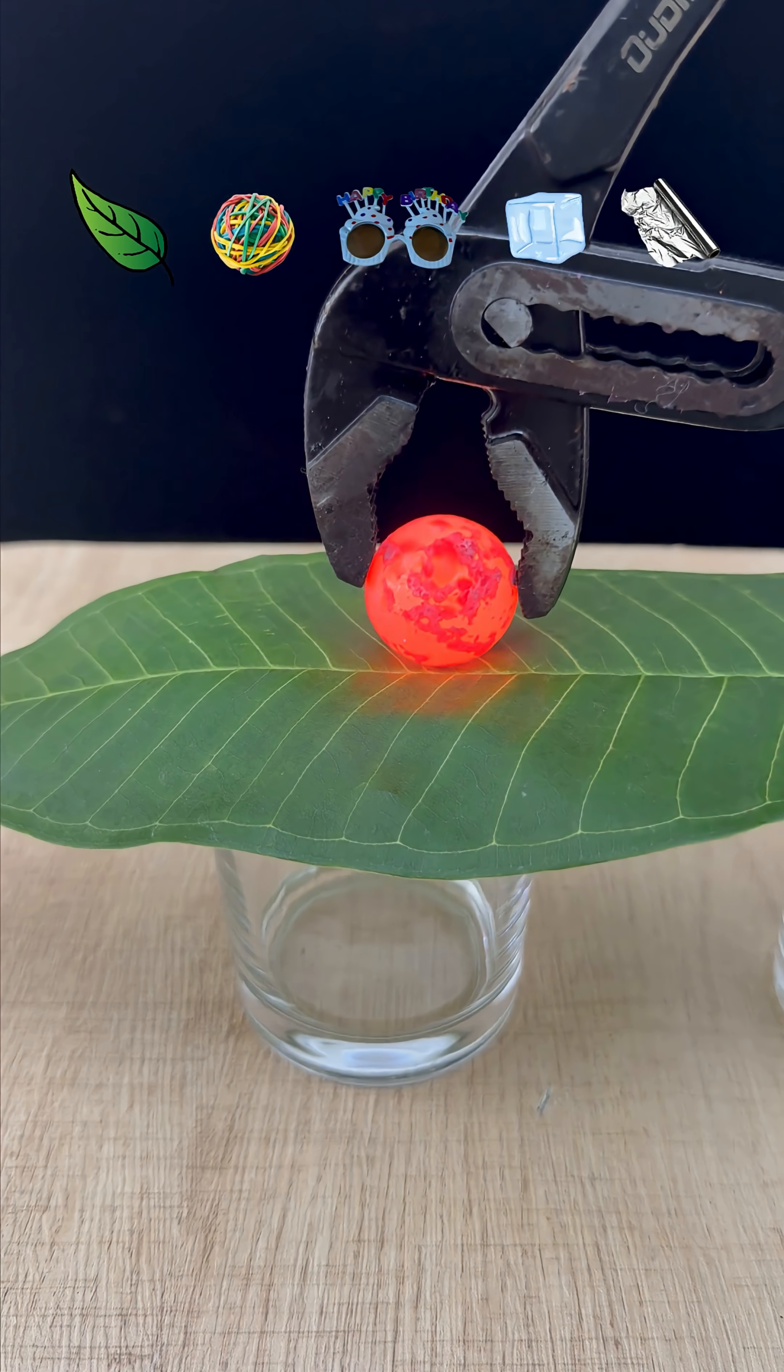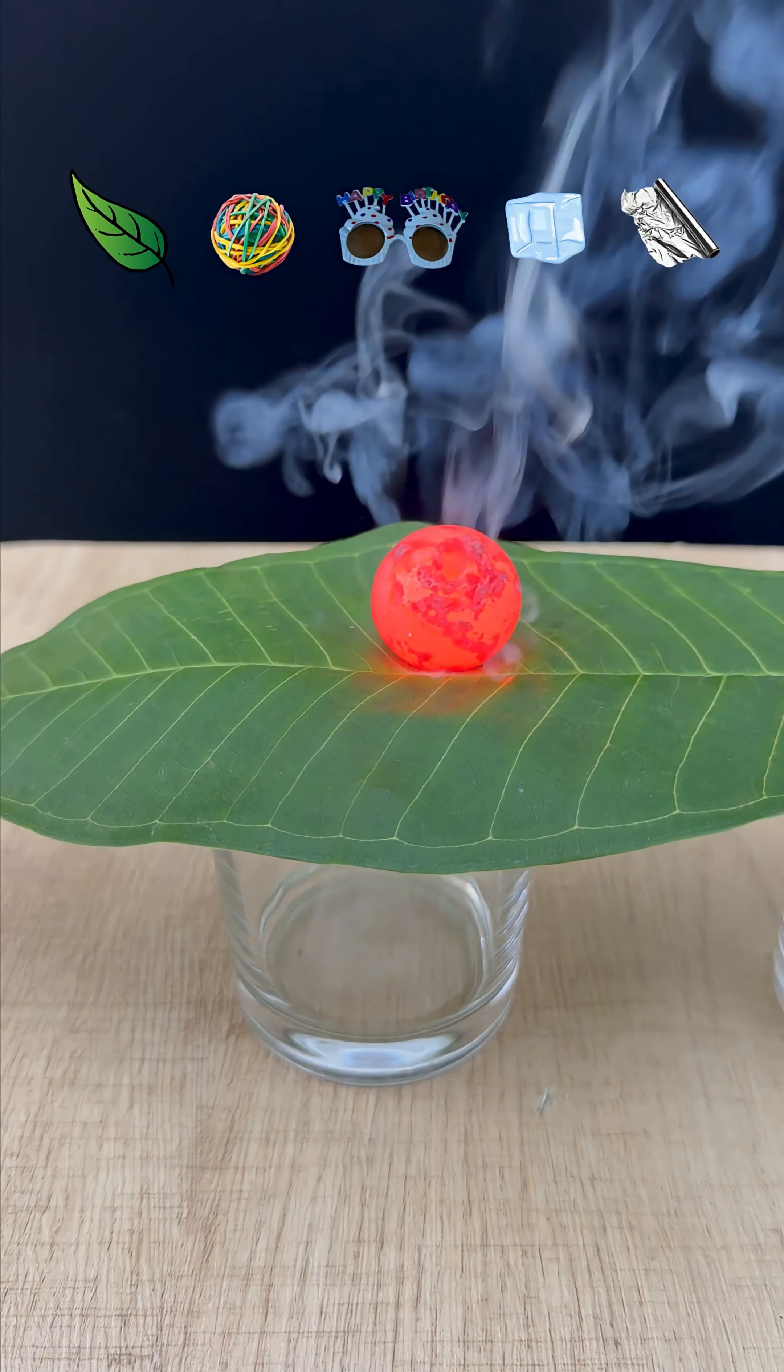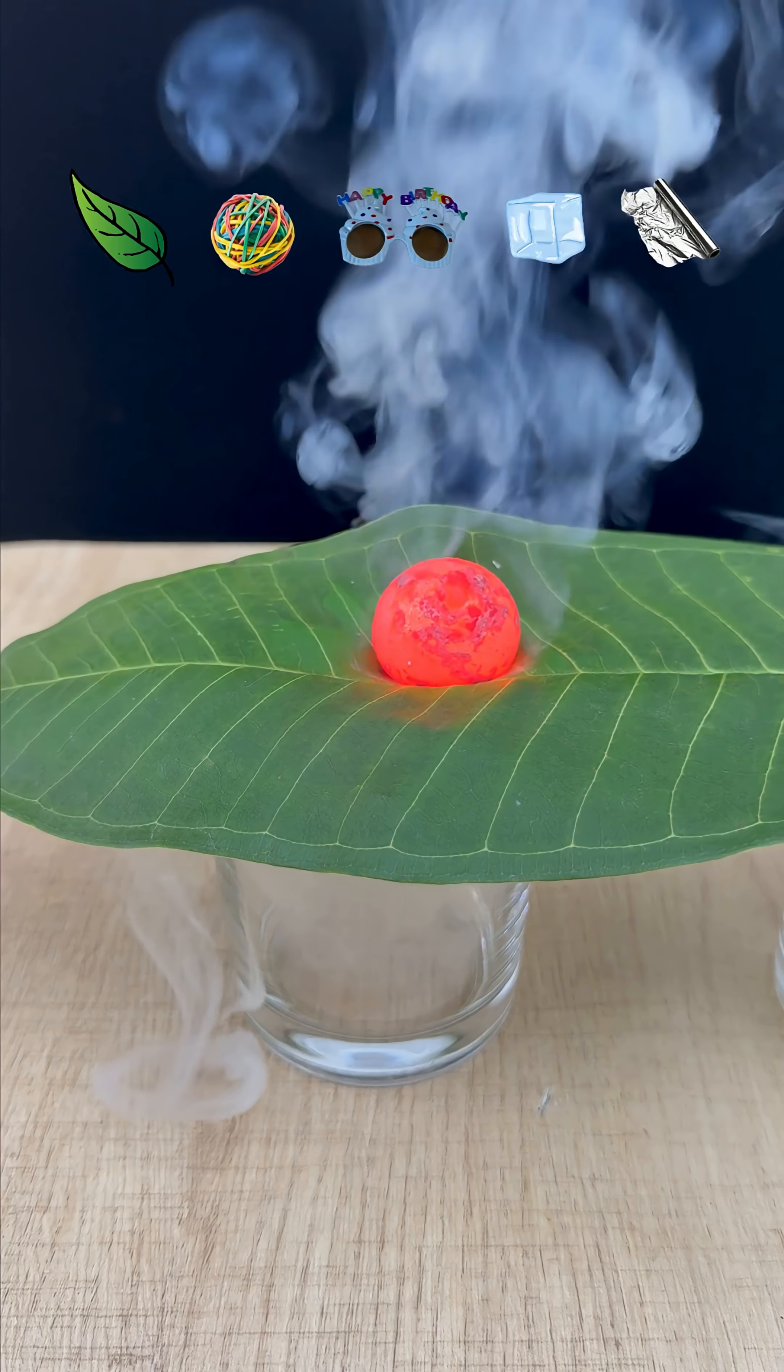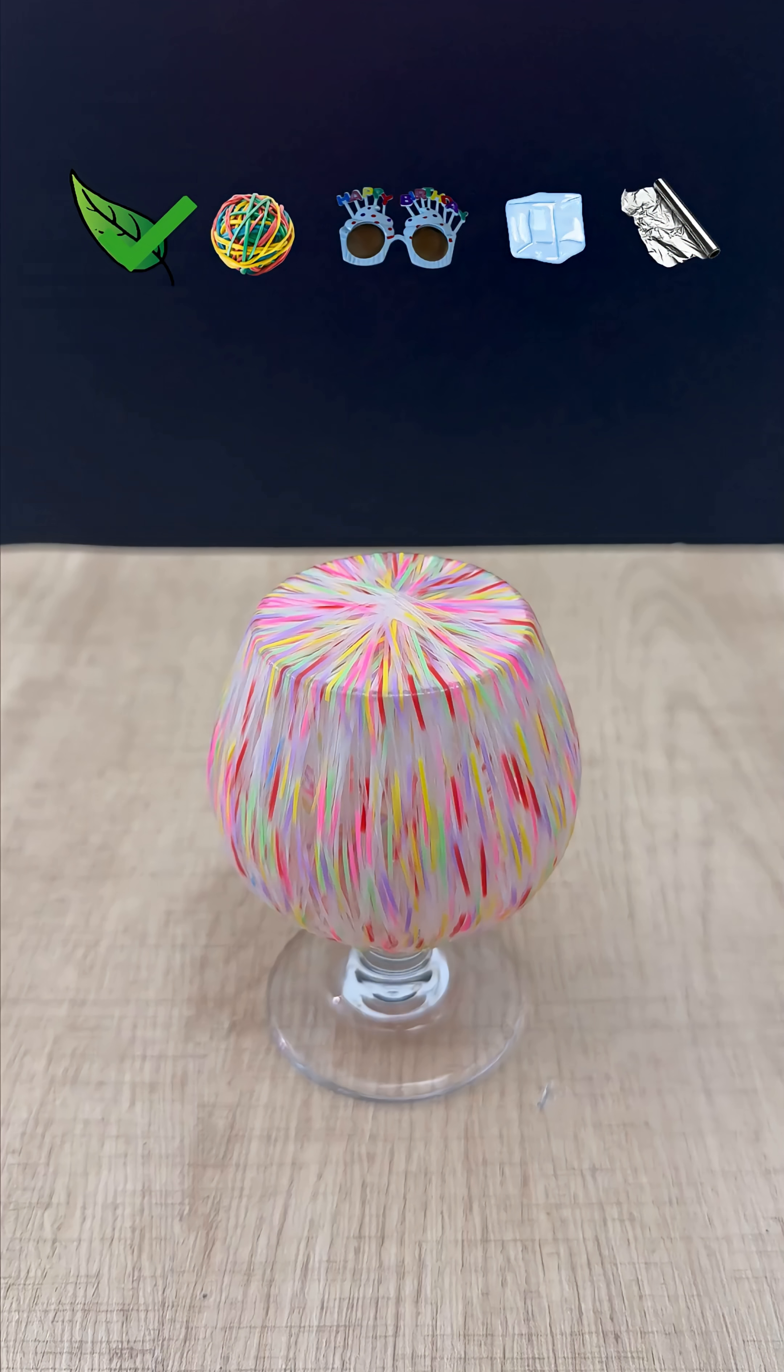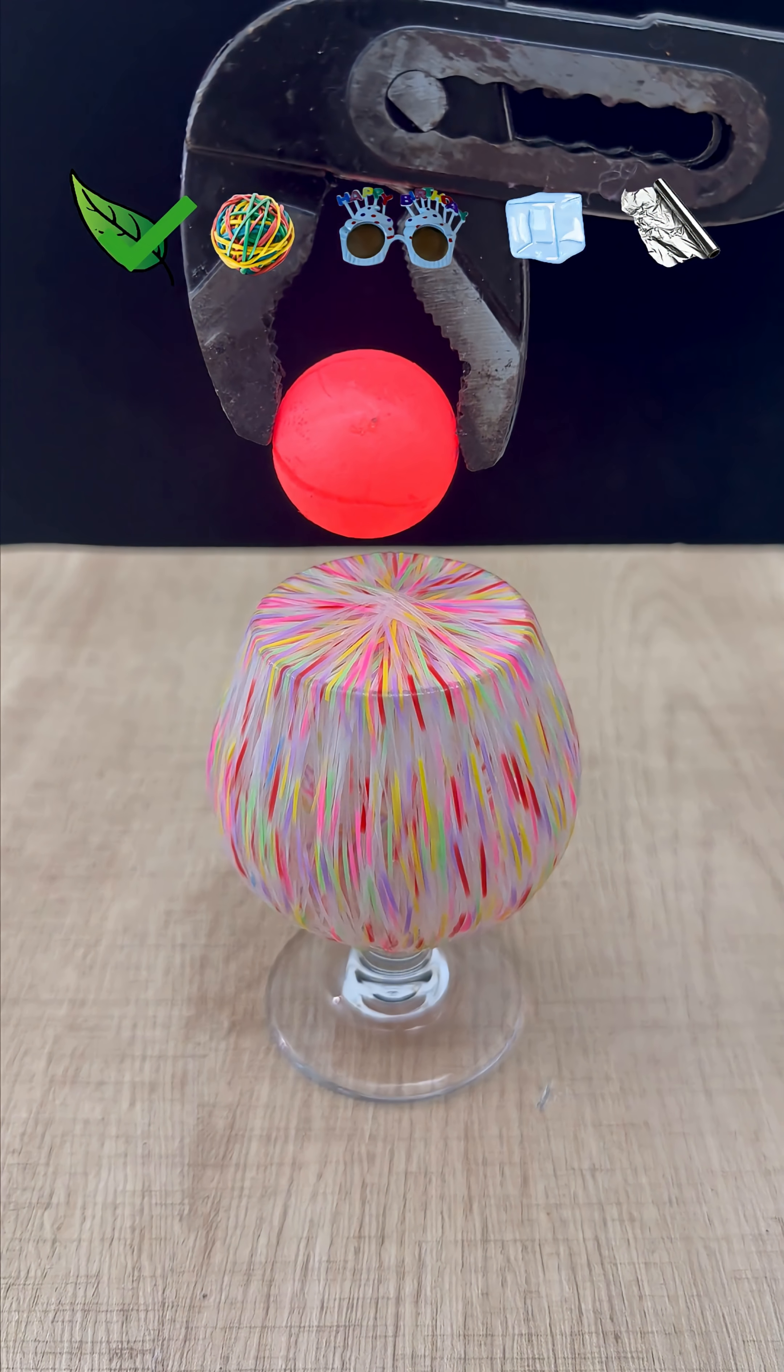First up, leaf. The moment the hot iron ball touched it, the leaf started burning instantly. Within seconds, a hole formed in the centre and the ball dropped into the glass.